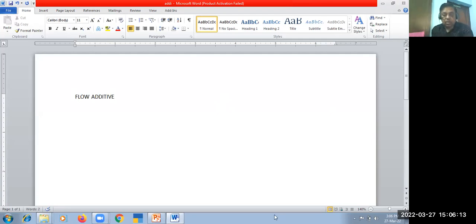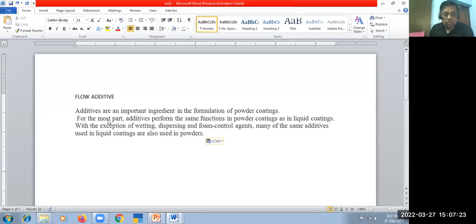Flow additives are important ingredients in the formulation of powder coating. For the most part, additives perform the same function in powder coating as in liquid paint. The same raw material is not used, but the function is the same like wetting, dispersing, flow, anti-cratering, texturing, powder. The same additives are used in liquid paint also.